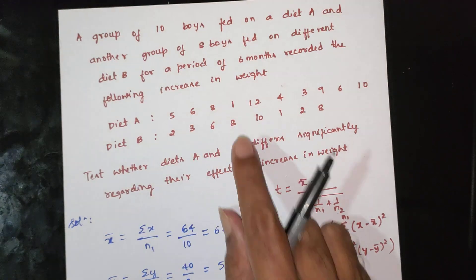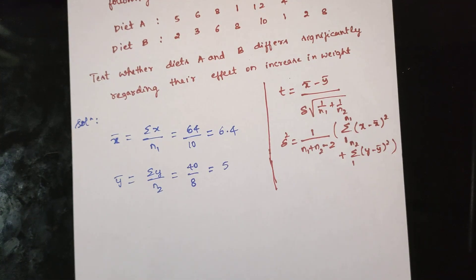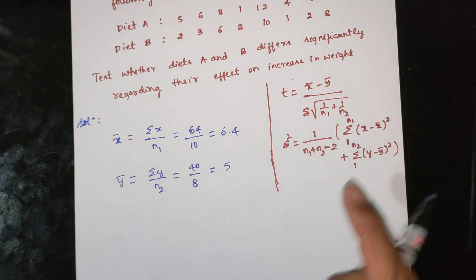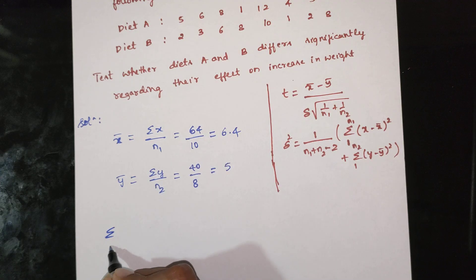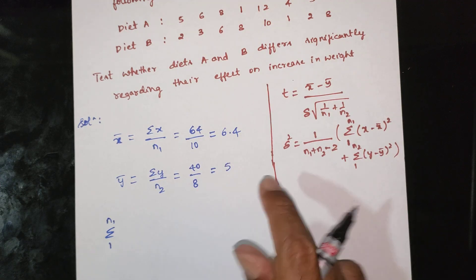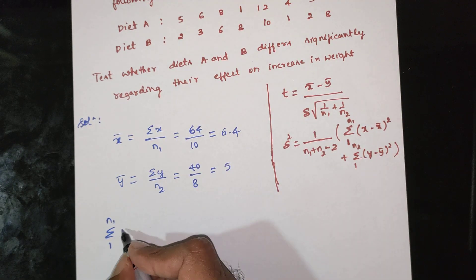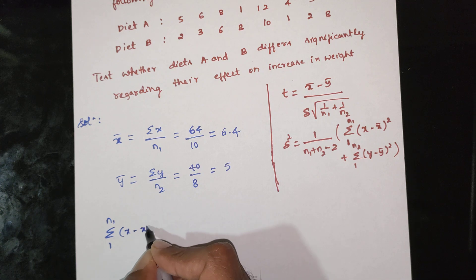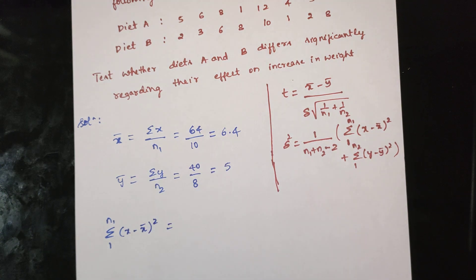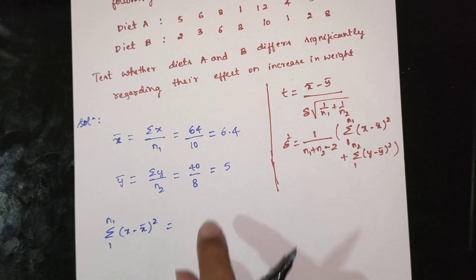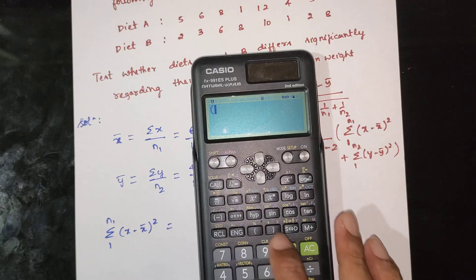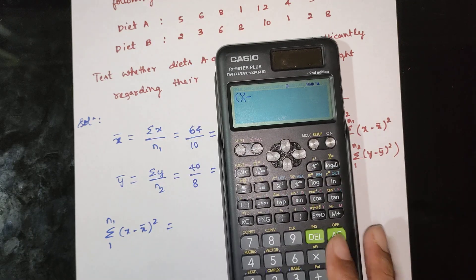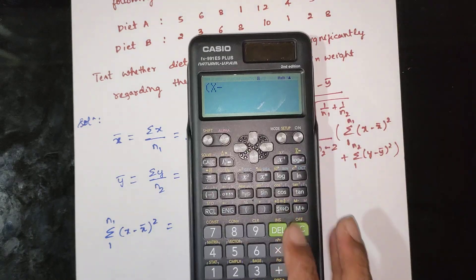Using the data in this form, the first summation is from 1 to n1 of (x minus x-bar) squared. Calculate x-bar: x-bar equals 6.4. Now compute each (x minus x-bar) squared term.